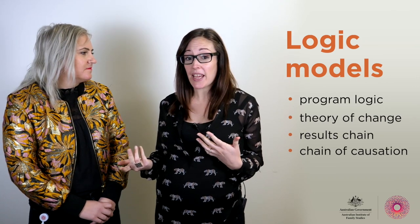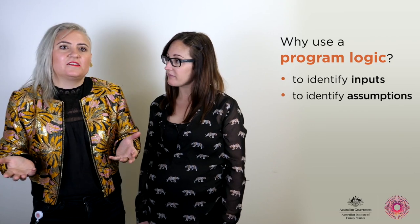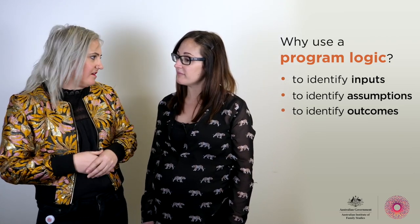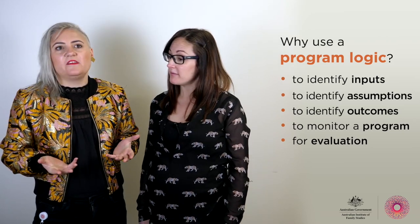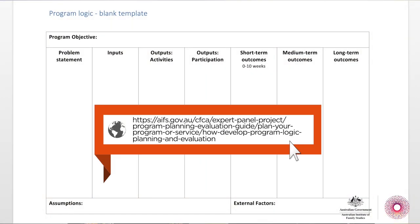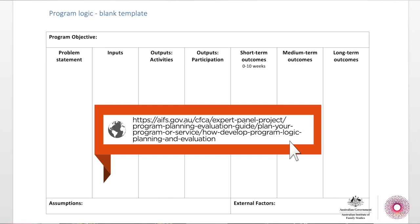When we say program logic or logic model in this video, what we're talking about is a visual representation of how something like an intervention is supposed to work. You may have heard it called theory of change, results chain or chain of causation. A program logic can help you to identify what inputs or investments are required for your program, what assumptions or other factors are likely to influence the success of your program, and of course your outcomes. They can also be used as a great tool to monitor your program goals or for evaluation. We've got a downloadable blank template — you can click the link and print a copy, and it might be handy to have some post-it notes and a pen as well.